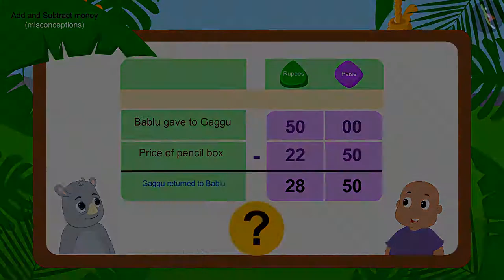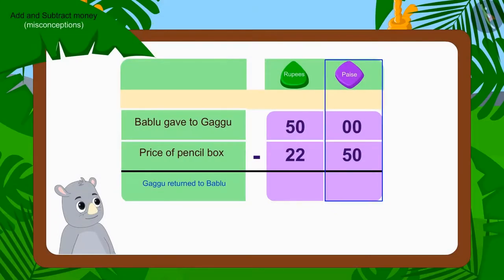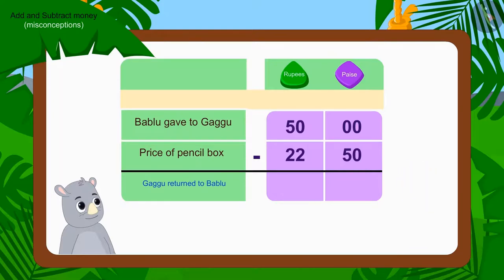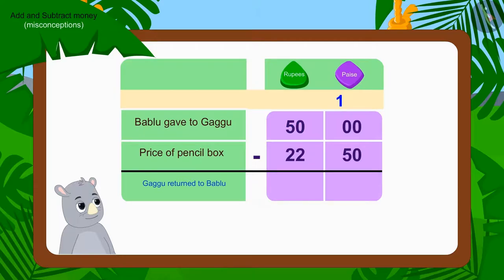Let's see. First, we will subtract the numbers written in paise. Oh no, can we deduct 50 paise out of 0 paise? No. So what shall we do now? Now we will use the borrowing process. We will borrow 1 rupee out of 50 rupees, and in this way, we will write it as 100 paise.